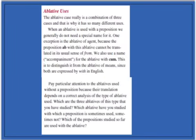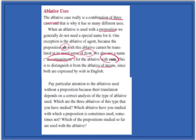The ablative case was really a combination of three cases, and that's why there are so many different uses. When we talk about ablatives used with a preposition, we don't really need a special name for it, but there are a few that we do have. For example, the ablative of agent is generally with a person and a passive verb. We have a special name for cum because it's the ablative of accompaniment — distinguish it from the ablative of means, because they're both translated as 'with' in English. You have to pay particular attention to ablatives without a preposition, because their translation depends on what type of ablative is used: ablative of means, ablative of respect, ablative of manner.